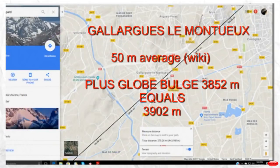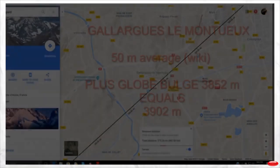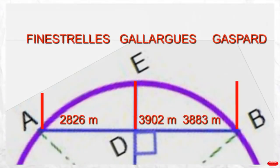To the calculated globe bulge we add the elevation in the middle between the two mountains, which is 50 meters, giving a total of 3902 meters — the total fictional globe bulge. We see three red lines representing both mountains and the bulge in the middle. The total bulge in the middle is actually slightly taller than Mount Gaspard, though I have made both lines the same height, which actually favors the globe.